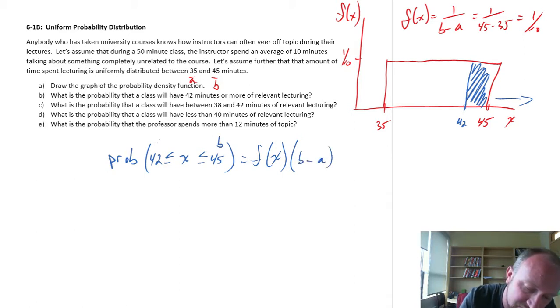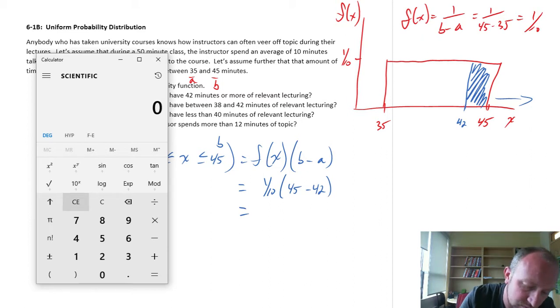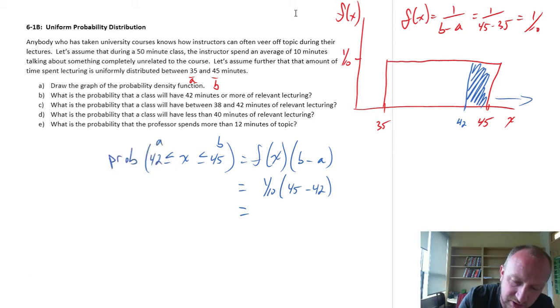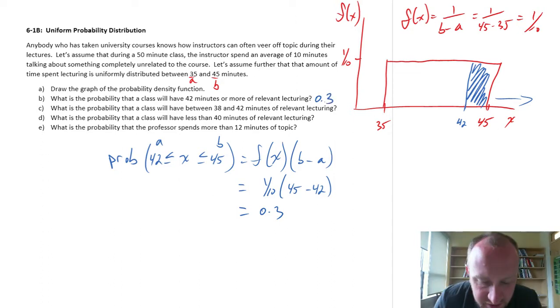So this is 1 tenth times 45 minus 42. So this is going to be 0.1 times 3, so 0.3. So there's our probability, 42 minutes or more. Call it a 30% chance that the class will have 42 minutes or more of relevant lecturing.